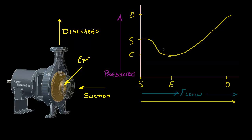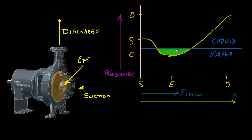Let's try a different example. In this case, let's assume that the boiling pressure is located here, higher than previously. You can think of this as the line at which boiling occurs — everything above this line is a liquid, and below the line is a vapor. Notice this area where the pump curve line is lower than the vapor pressure line. This is the area where gas bubbles are being formed in the fluid.